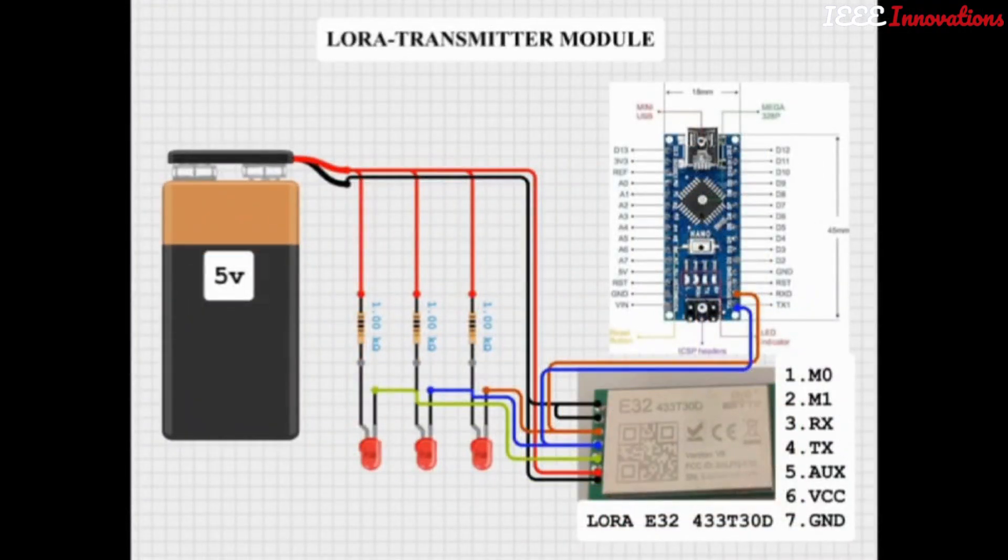This circuit is a LoRa transmitter module. This LoRa E32 433D 330D module has an 8 kilometer range. Here we are using this LoRa in mode 0 as both transmitter and receiver.